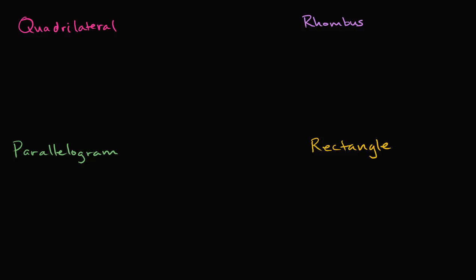What I want to talk about in this video is shapes with four sides. The mathy word for shapes with four sides is quadrilateral. Any time you see 'quad' as part of a word, it's a good sign that you're dealing with the number four somehow. So a quadrilateral is something that has four sides — they all have four sides.